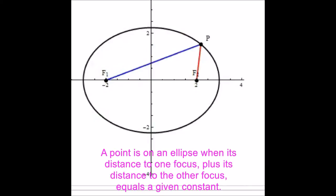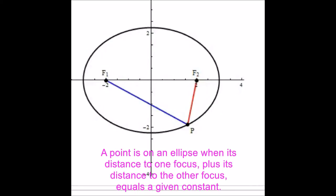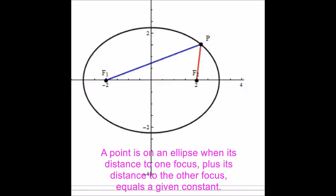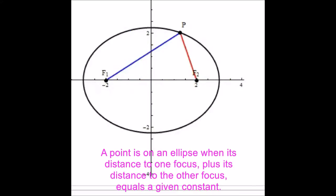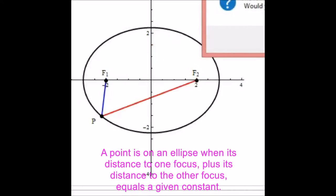As we change P, it goes around and around this ellipse — sweeping out or defining this ellipse. As it goes, you can see that the total length of the red line segment plus the total length of the blue line segment are always going to be the same.